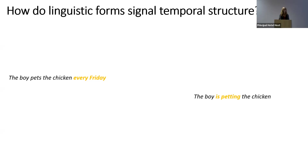If I tell you the boy is petting the chicken, you will infer this is a currently ongoing action, because of this grammatical device called aspect, here realized as the English progressive. There are different ways we learn about the temporal structure of events from language, but today I want to focus on one device with equivalents in many languages of the world: namely, the simple past.